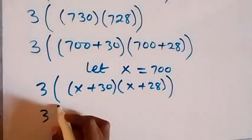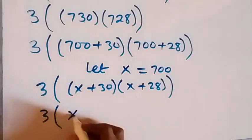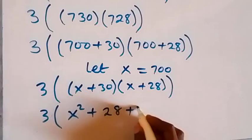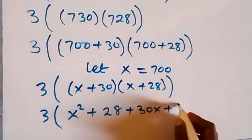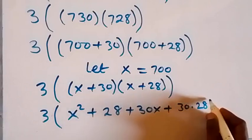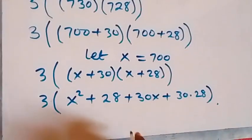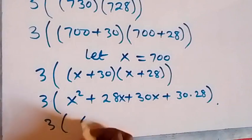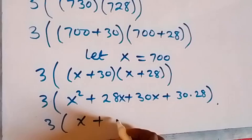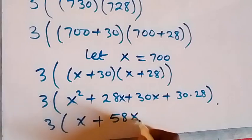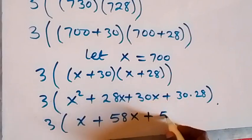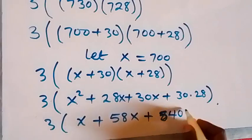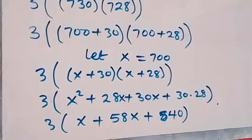When we expand the bracket, x times x gives x squared, plus x times 28 gives 28x, plus 30 times x gives 30x, plus 30 times 28. Adding the like terms together, 28x plus 30x gives 58x, and 30 times 28 gives 840. So we have 3 into bracket: x squared plus 58x plus 840.